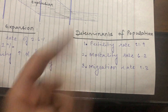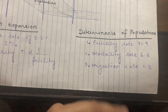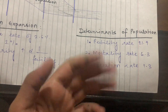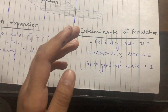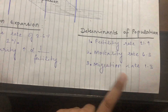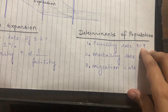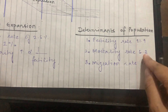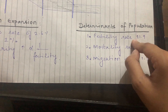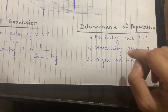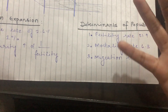The determinants of population are three: fertility rate (number of births per thousand people in a particular area), mortality rate (number of deaths per thousand people), and migration rate (movement of people in and out of a particular territory per thousand people). For Pakistan specifically: the fertility rate is 21.9 per thousand, mortality rate is 6.3 per thousand, and migration rate is 1.3 per thousand. Since the fertility rate is much higher than the mortality rate, Pakistan is considered the 5th most populous country in the world.